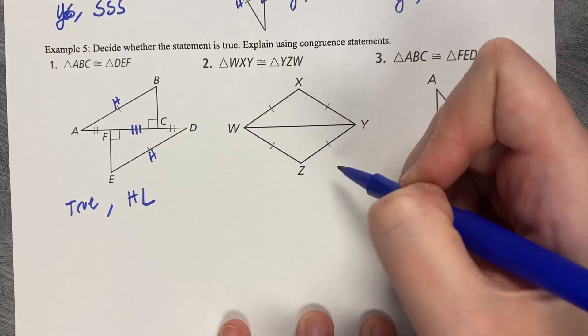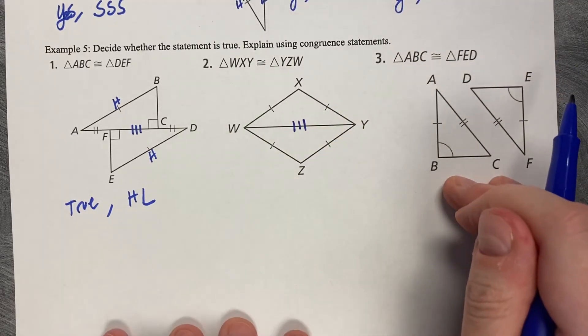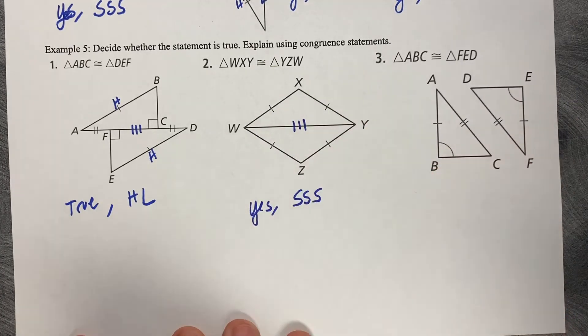I can see two matching sides for isosceles, but then they have a shared side. I can put three tick marks. I only needed two, but this will be yes by side-side-side.